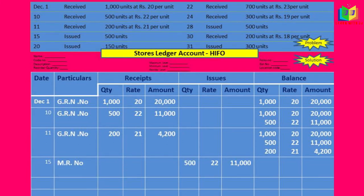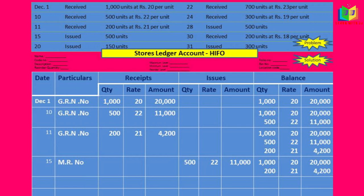On the 15th we have 500 units issued. For issuing, we check the balance column — we have rates of 20, 22, and 21. Among these, 22 is the highest rate, so we issue at that rate. 500 units at 22 gives 11,000. In the balance column, the remaining rates of 20 rupees and 21 rupees will stay, because the 500 units at 22 rupees have been fully issued.